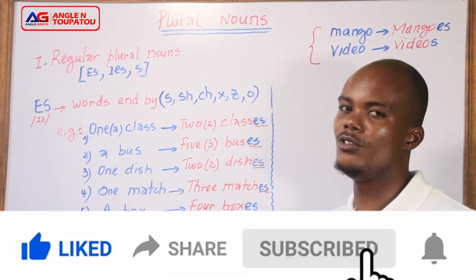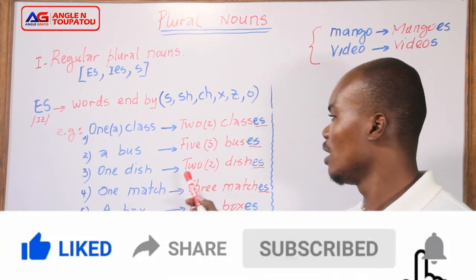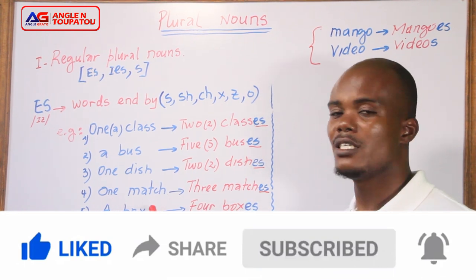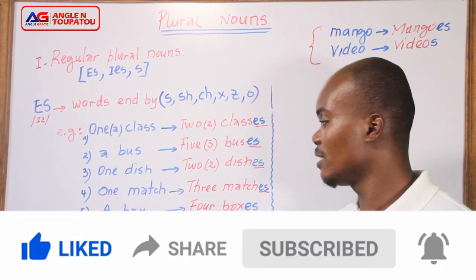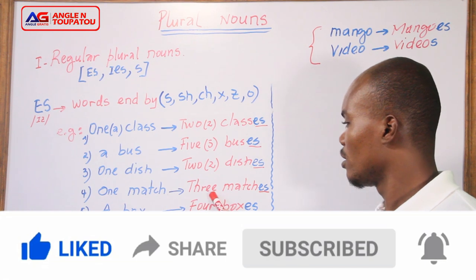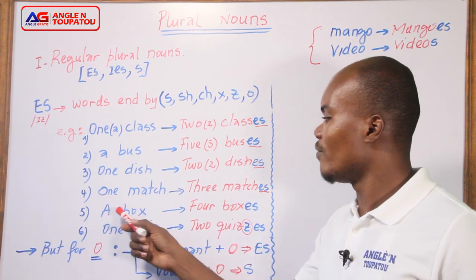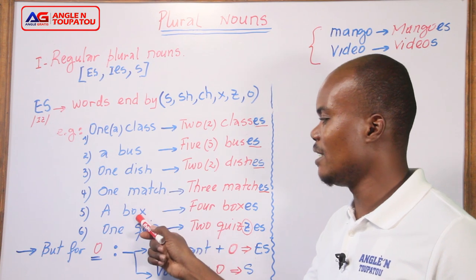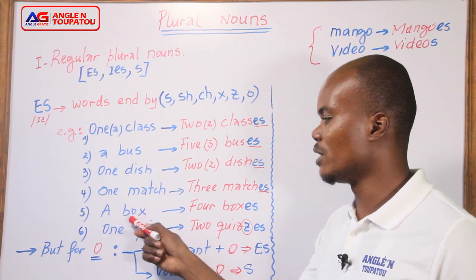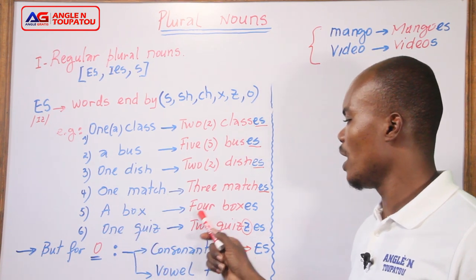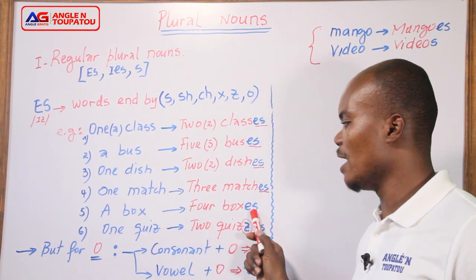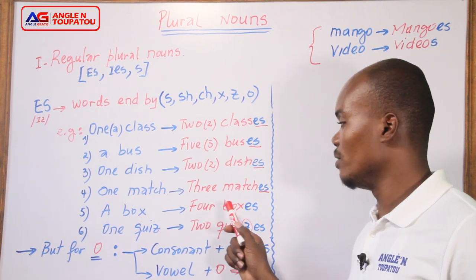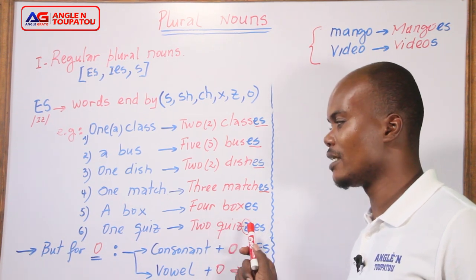When I have one dish — yon vaisseau — two dishes. One match — yon alimette — three matches. When I have a box — la, termine pa X — mou sa termine pa X, you add ES, you say four boxes. Pa veut dire, mou gien quatre boîtes.